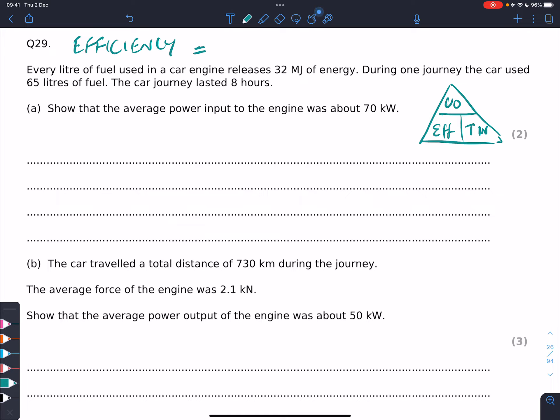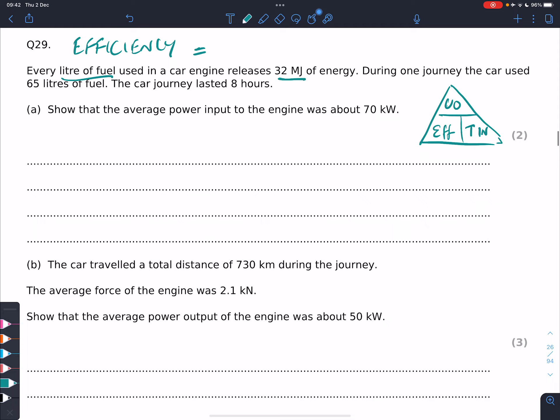We're going to first look at what it's asking for. Every litre of fuel releases 32 megajoules of energy. Important to realize that a megajoule equals 1 × 10^6 joules, a million joules. During one journey the car used 65 litres of fuel and the journey lasted 8 hours.